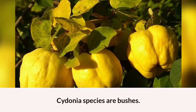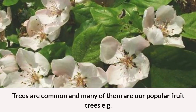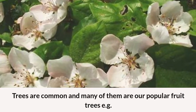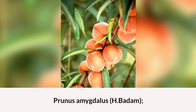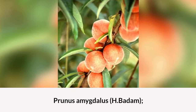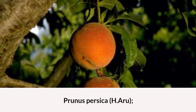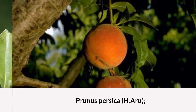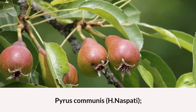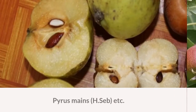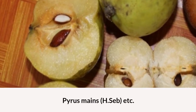Subfamily Maloideae species are bushes and trees, and many of them are popular fruit trees. For example: Prunus amygdalus (almond), Prunus persica (peach), Pyrus communis (pear), Pyrus malus (apple), etc.